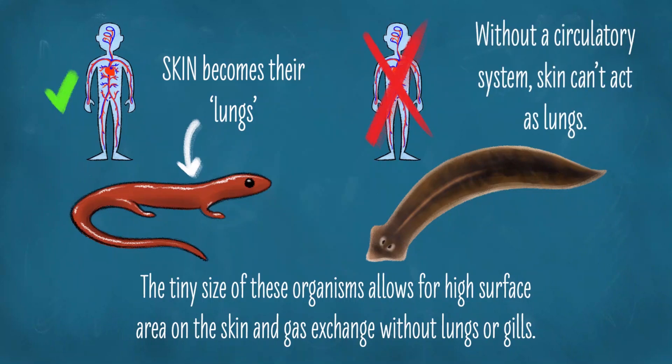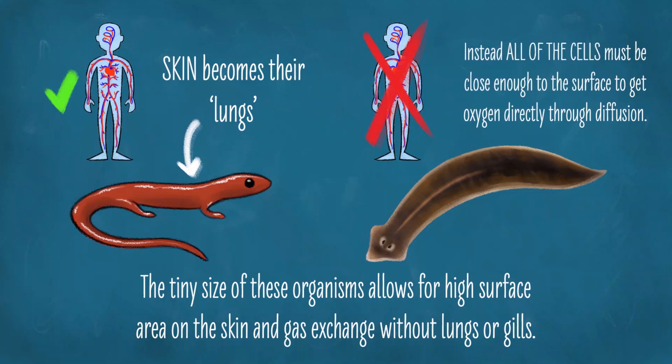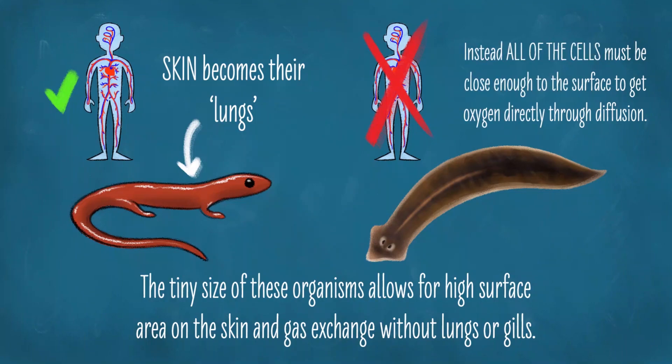Instead, all of the cells in the animal must be close enough to the surface to get oxygen directly through diffusion. This means that the animal needs to be either very small or — you guessed it — flat. And so flatworms that aren't extremely tiny are extremely flat, and that solves their oxygen problem.